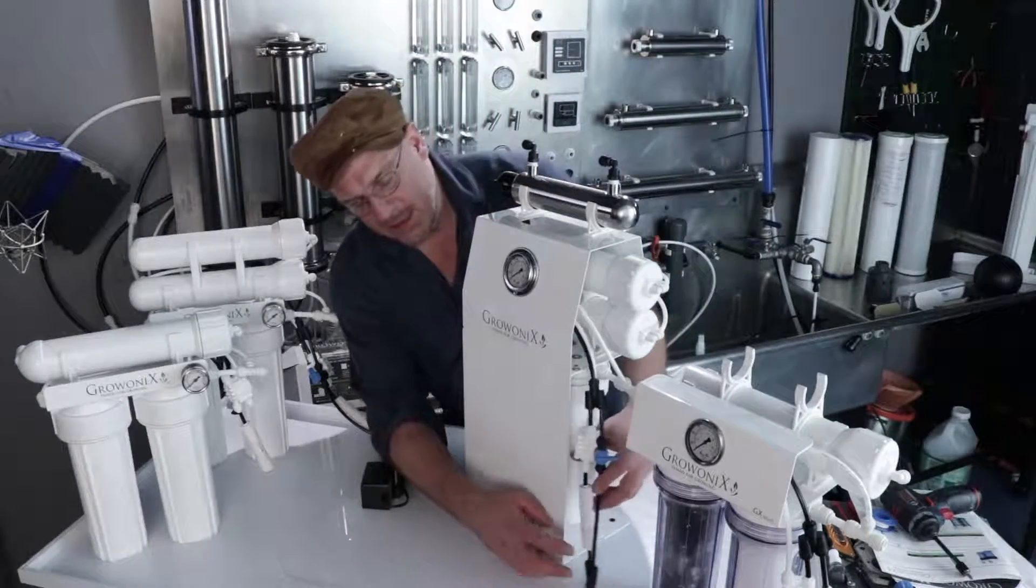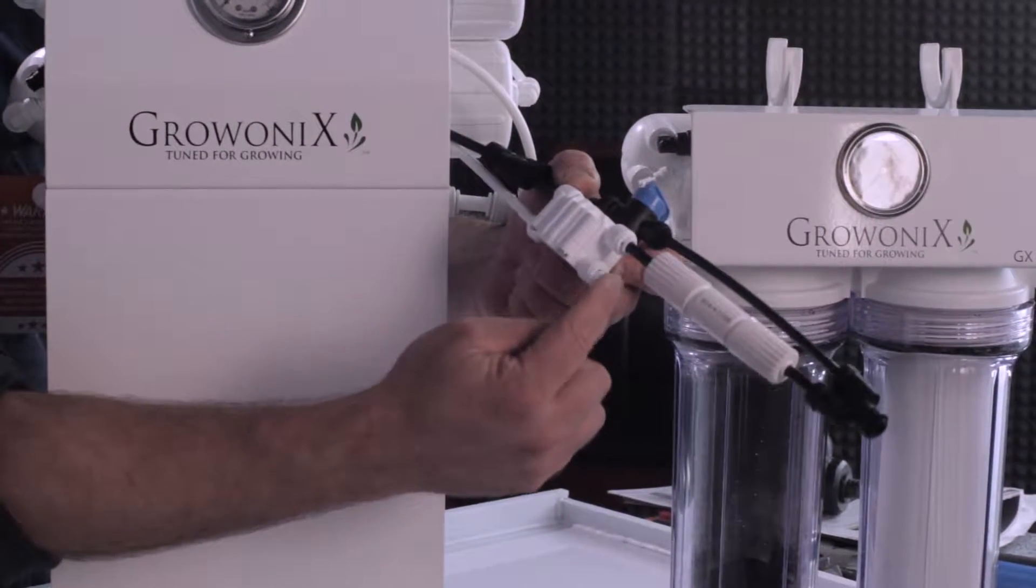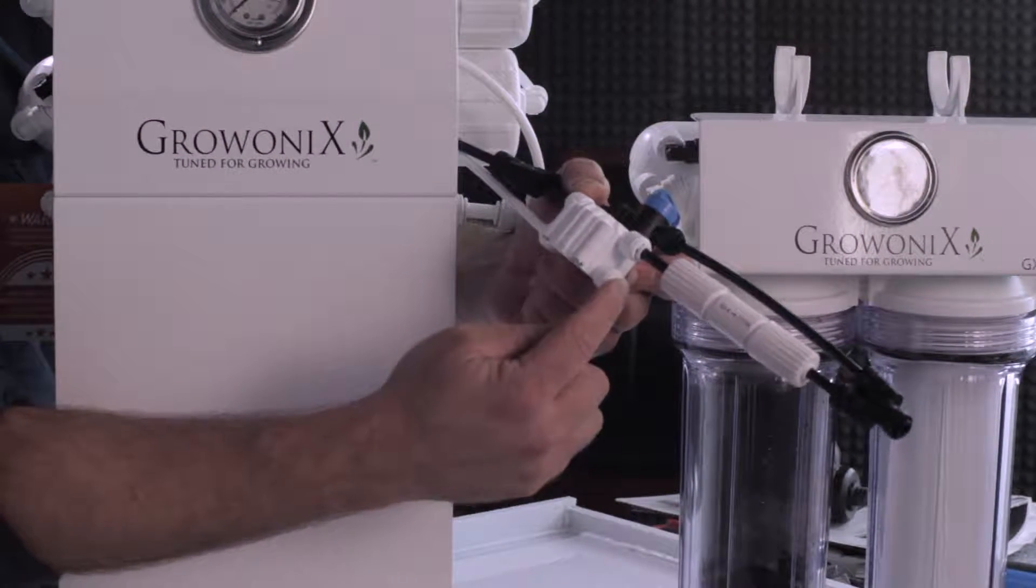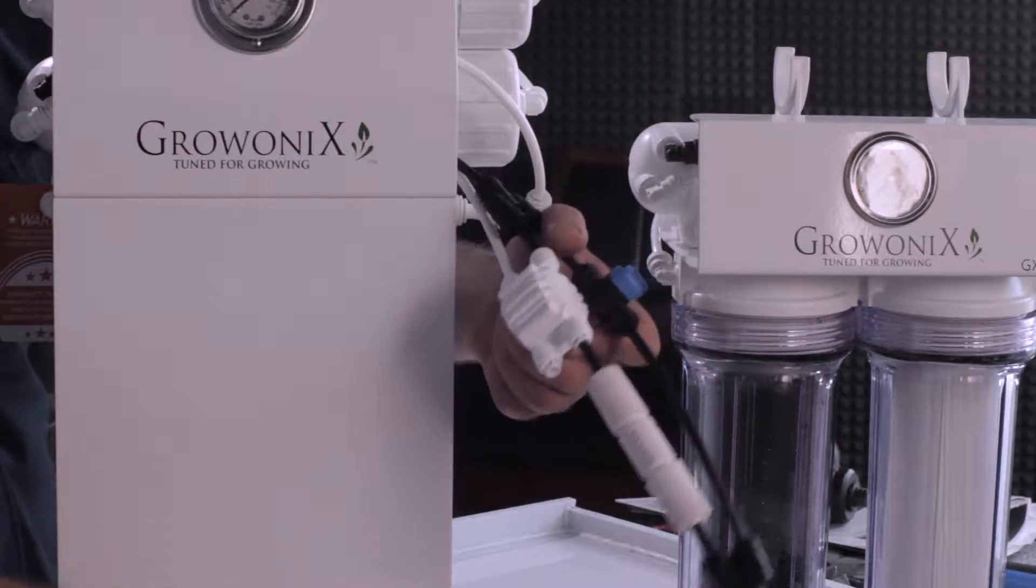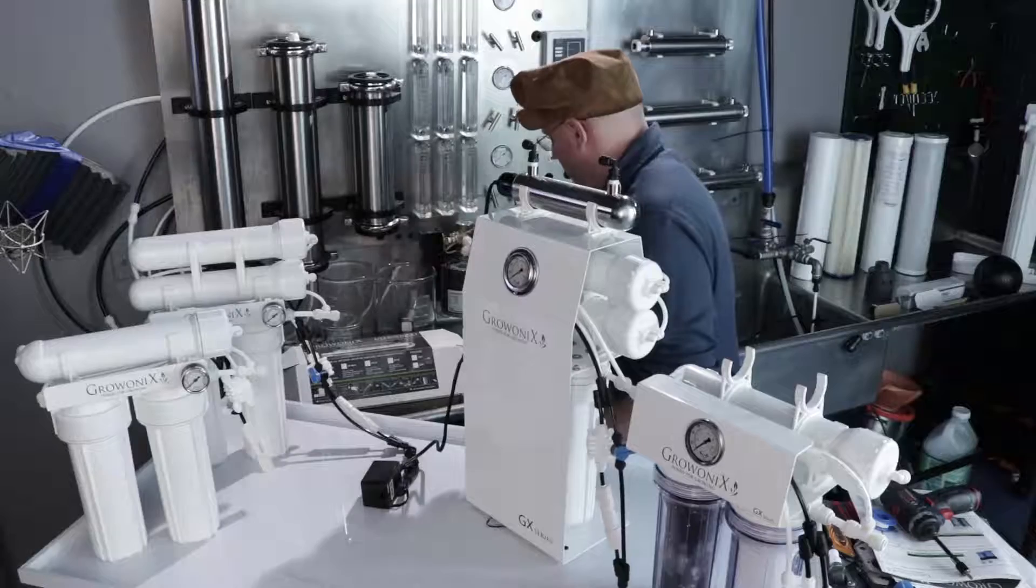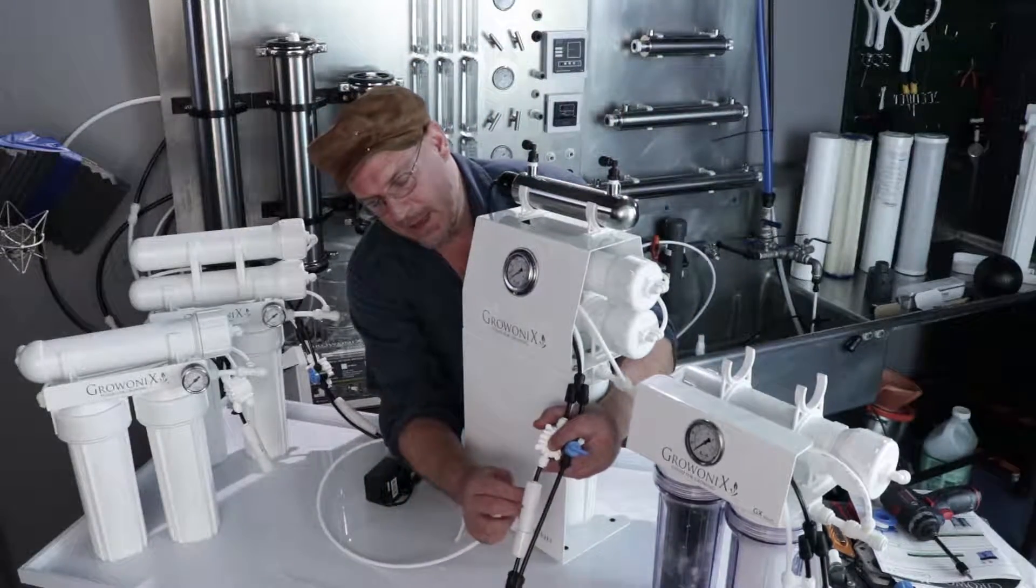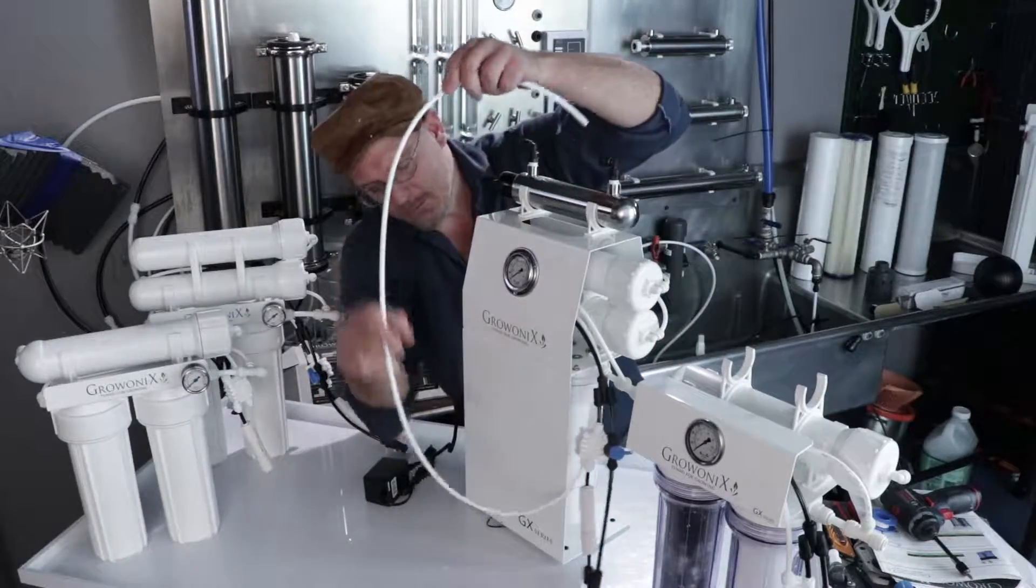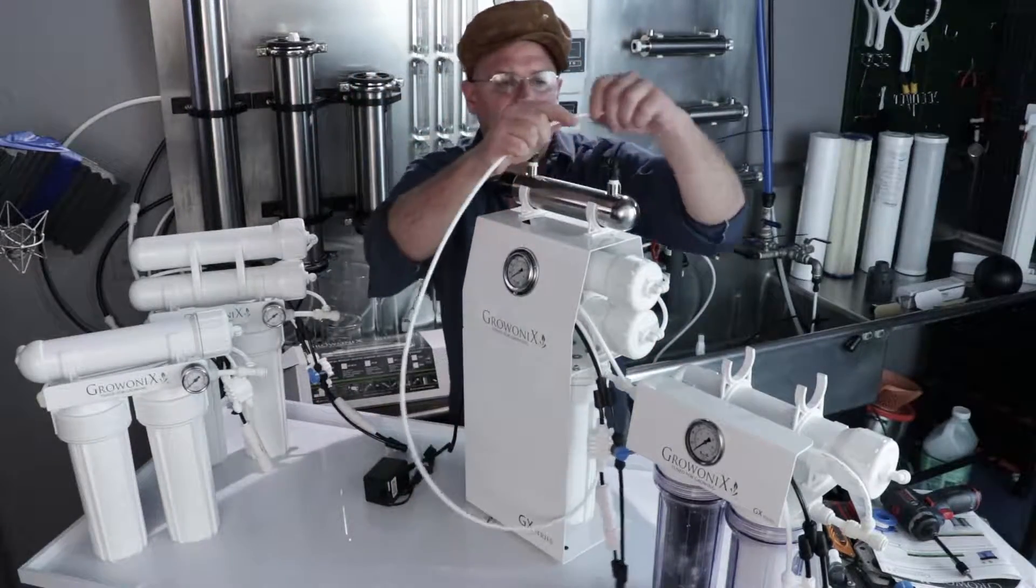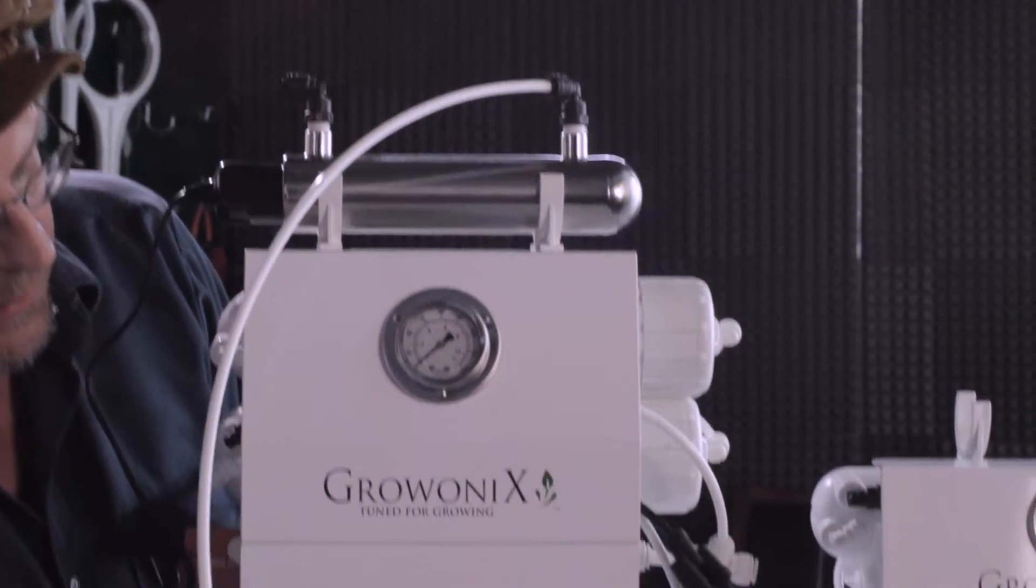So, what we want to do is take the RO output, the permeate water output, which is usually located right here on the bottom of the ASV. This would normally be running to your storage tank or reservoir. And we want to take that, insert a line there, and just run that line up to one end of the UV. Like so.